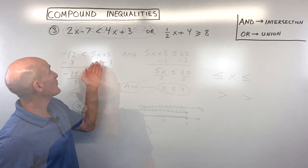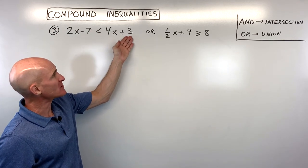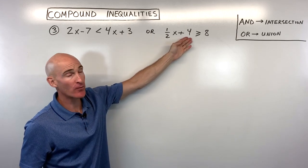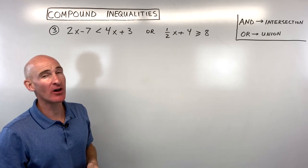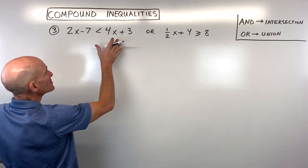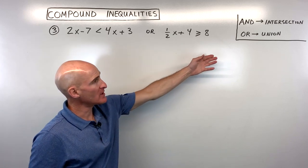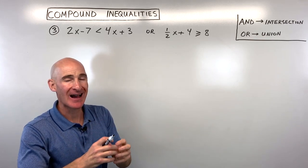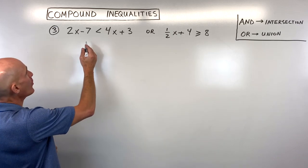For example 3, we have: 2x minus 7 is less than 4x plus 3, or one-half x plus 4 is greater than or equal to 8. Since it's an 'or', we can solve these individually, then remember 'or' means union — we look at the combination of the two solution sets.